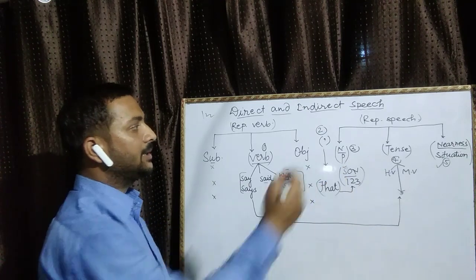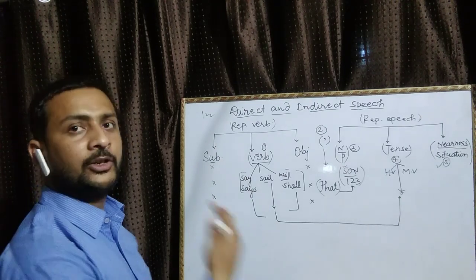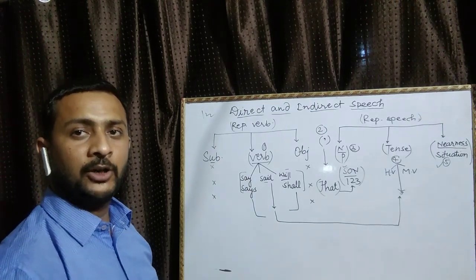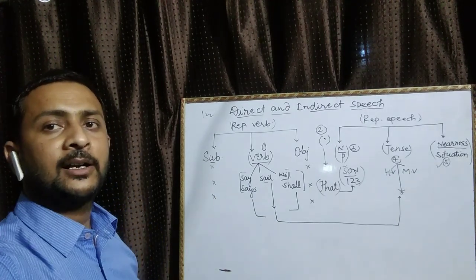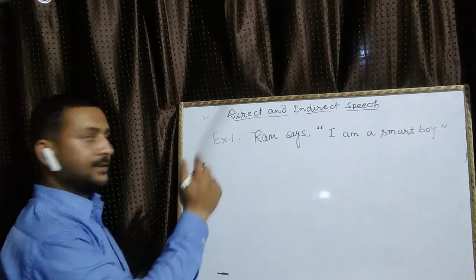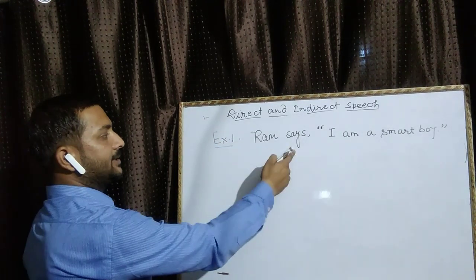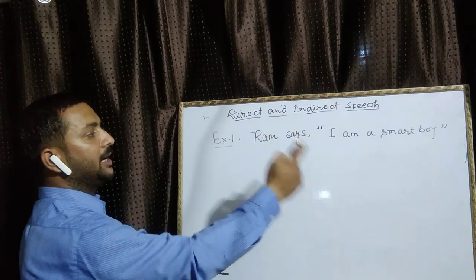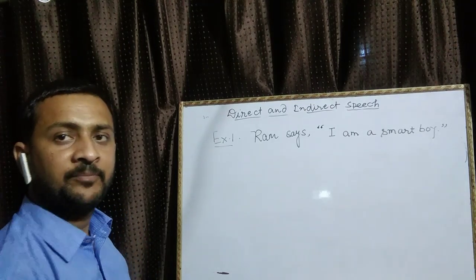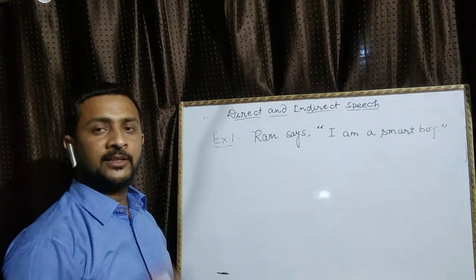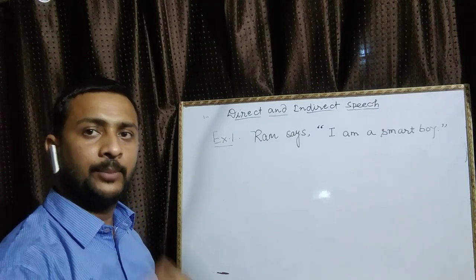अब हम example के माध्यम से बताएंगे कि direct-indirect का यह figure है — short trick method से theory को हटा दिया गया है। Example number one: Ram says, 'I am a smart boy.' यह हमारा assertive sentence है। Assertive sentence means it starts from subject, whether negative or affirmative, both.